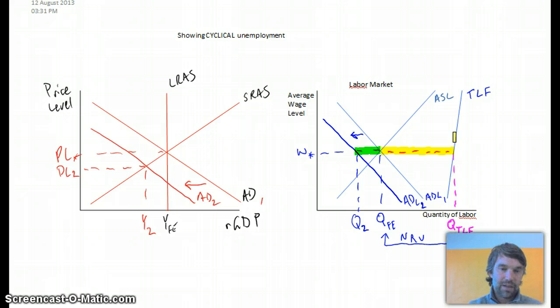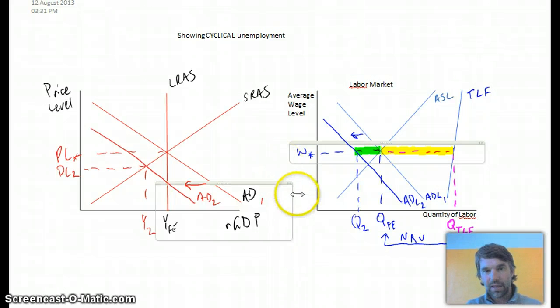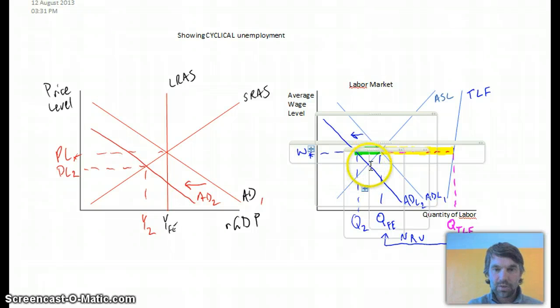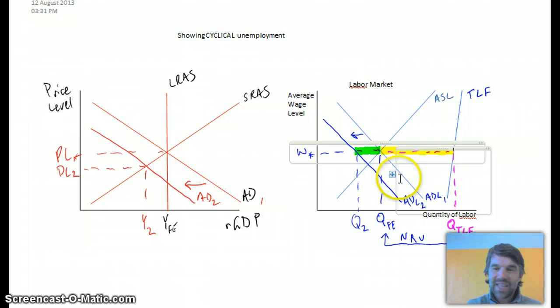Now sure, eventually, if this wage is flexible, if it's not a minimum wage or something like that, but if it can decrease, it will decrease down to this equilibrium you see here. And then we'll have a bigger NRU. But that's not really what we're showing right now. We're just showing the increase in cyclical unemployment.